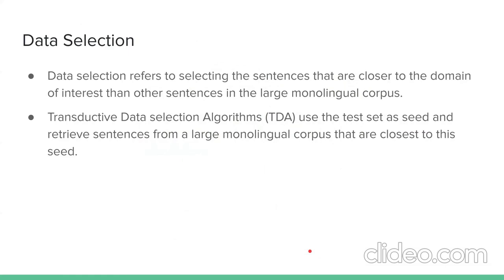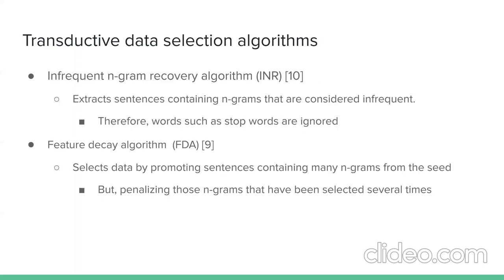Data selection refers to selecting sentences that are closer to the domain of interest within a large monolingual corpus. Transductive data selection uses the test set as a seed and retrieves sentences from the monolingual corpus that are closest to it. There are two transductive data selection algorithms: the Infrequent N-gram Retrieval (INR) algorithm and the Feature Decay Algorithm (FDA). INR extracts sentences containing N-grams that are infrequent in the seed.